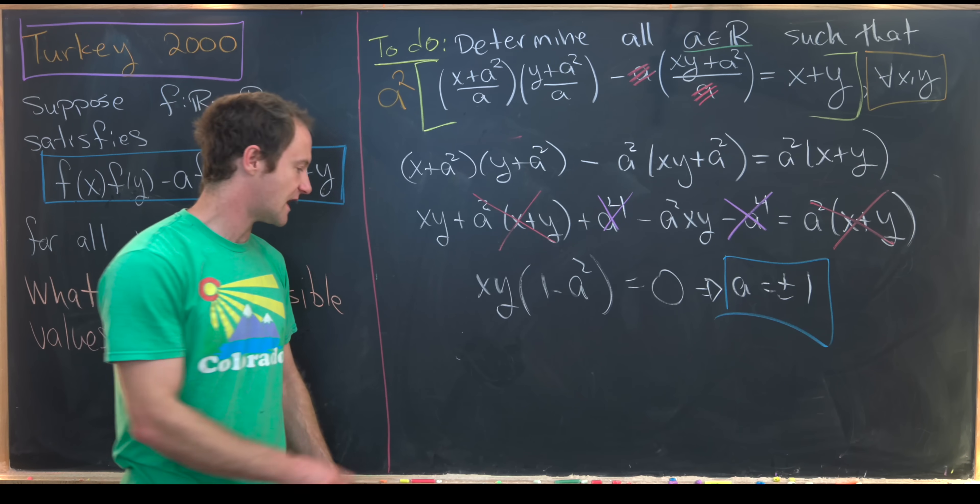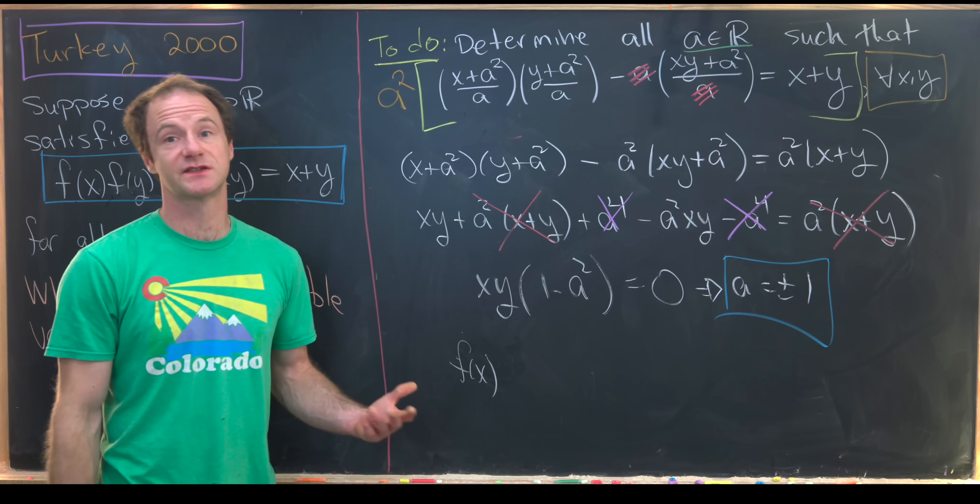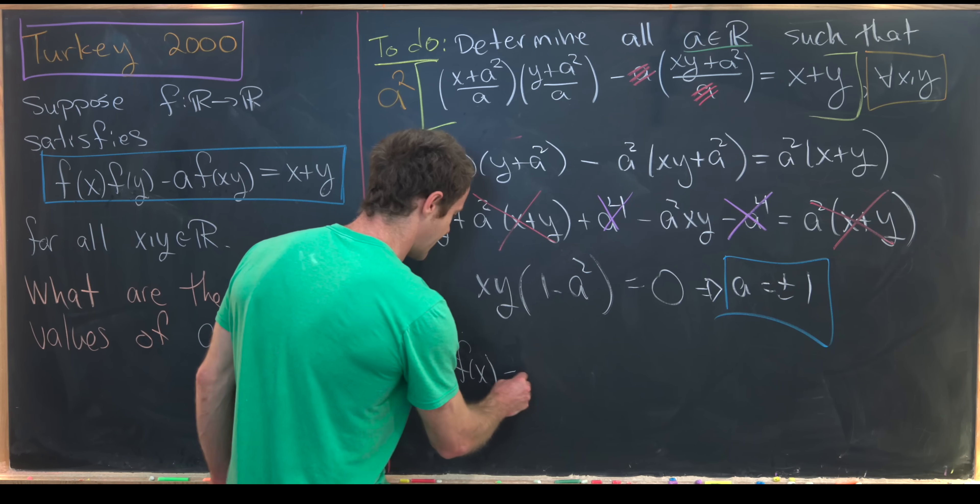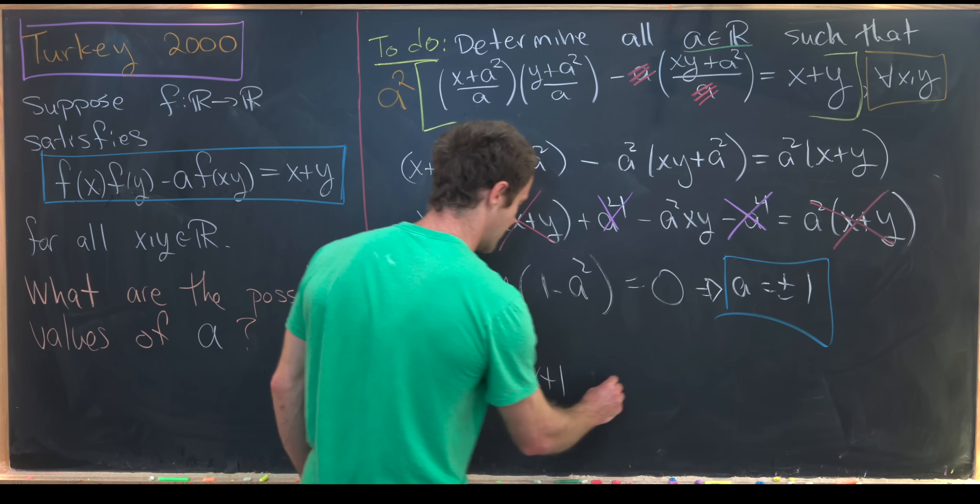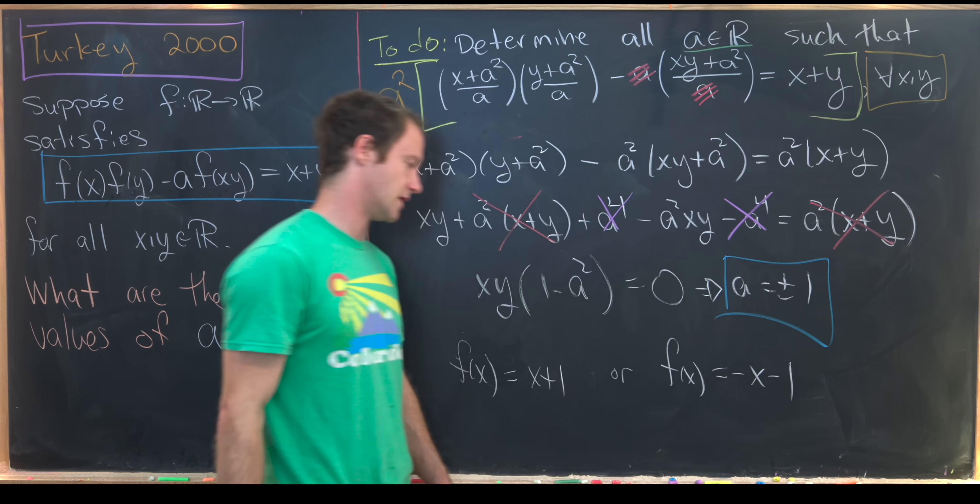And now putting those two values of a into our previous solution for our function f(x), we see that f(x) is either x+1, or f(x) is equal to -x-1.